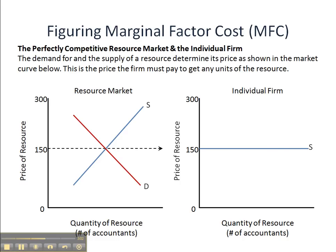In the resource market, the supply and demand for resources determines the price. Here, demand and supply intersect at a price of $150. For the individual firm, we're assuming a perfectly competitive resource market, which means there are an infinite number of buyers and sellers, each selling identical quality and quantity of a particular resource. The firm can buy all the units of resource it wants at the market price. Because no individual buyer or seller can affect the market, the firm must take the price of $150 as given. So we know our labor is going to cost $150 per unit.